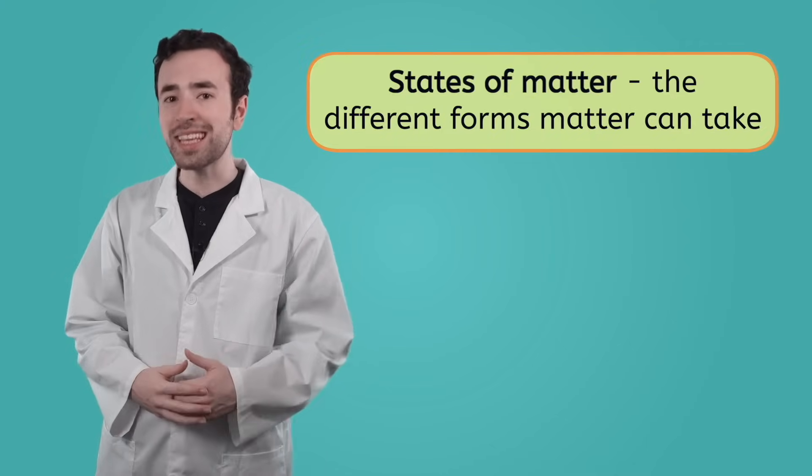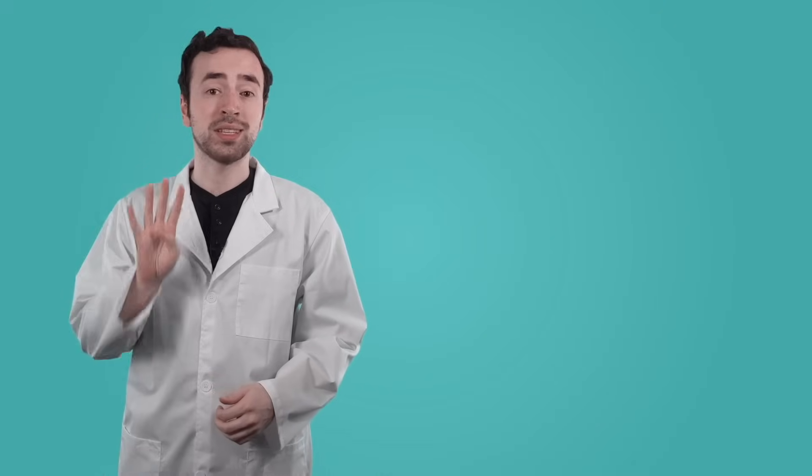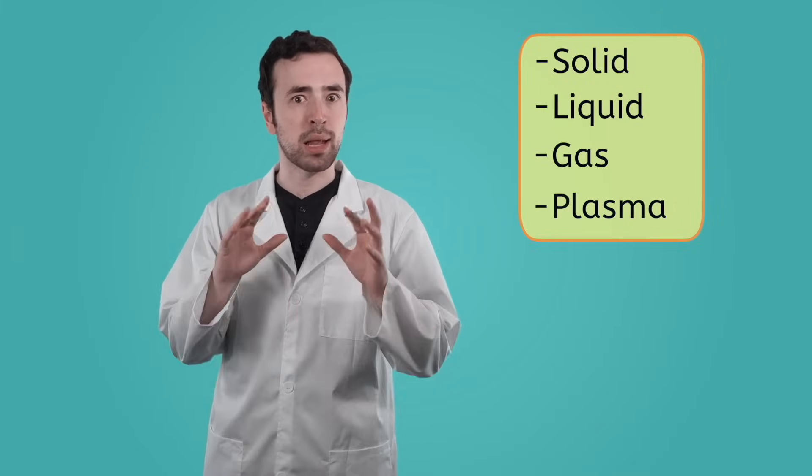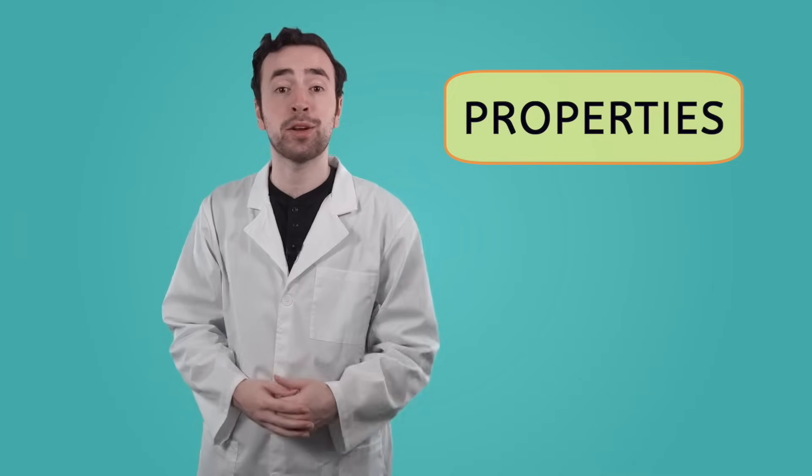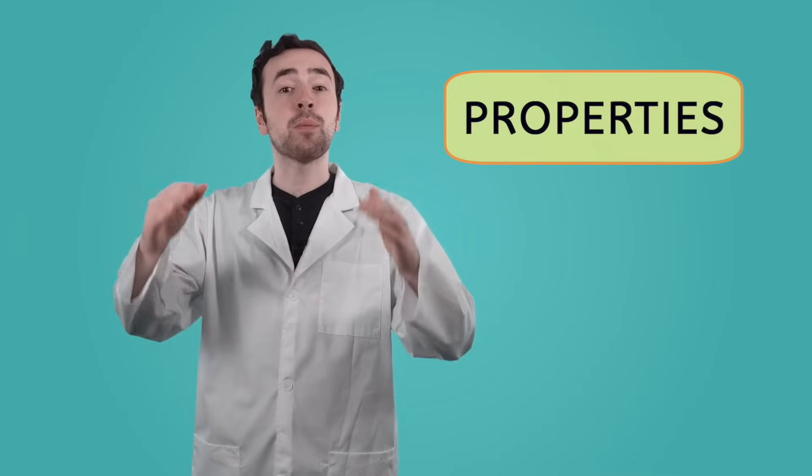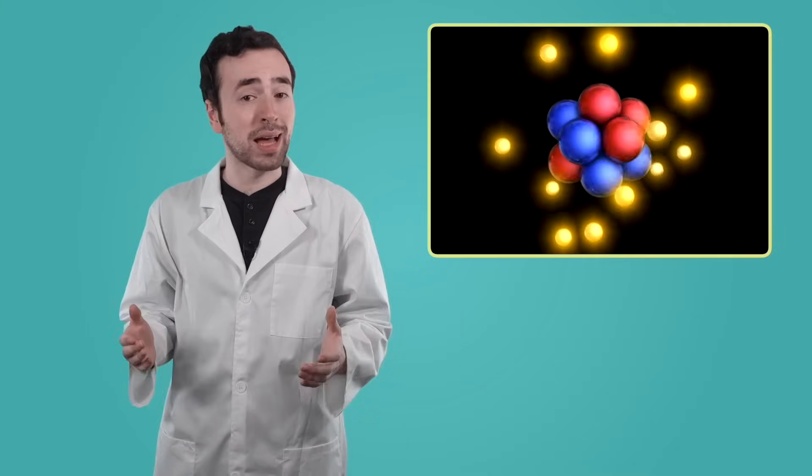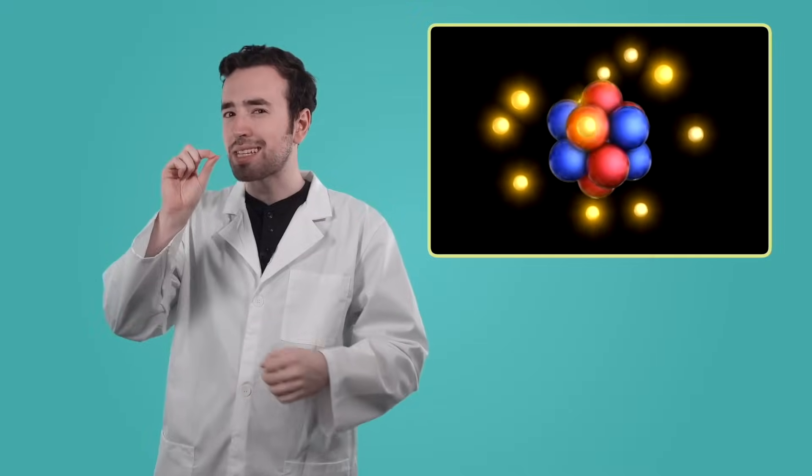What is a state? Well, state is one of those words with more than one definition. But in this case, it means the form that matter is in. Matter comes in four different states: solid, liquid, gas, and plasma. Each of these states have certain properties that will tell us how the matter will behave. These properties come from all the way down at the atomic level. Remember the last lesson when we learned that all matter was made up of teeny tiny atoms? Well, it's how these atoms are arranged that will tell us what state the matter is in.